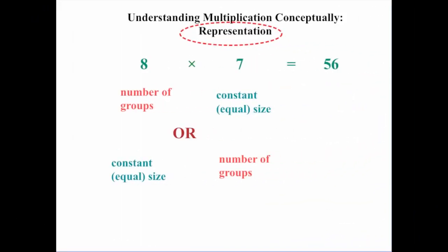Now let's look at this idea of representation. 8 times 7 being 56. Is 8 the number of groups and 7 is the size of the group? Or is it reversed? Is the 8 the size of the group and the 7 the number of groups?